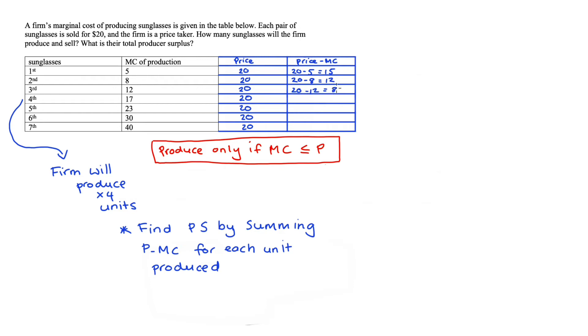For the fourth unit, we get 20 minus 17, which is 3. We're only going to produce these first four units, so now we can find the total producer surplus which is 15 plus 12 plus 8 plus 3 is equal to 38.